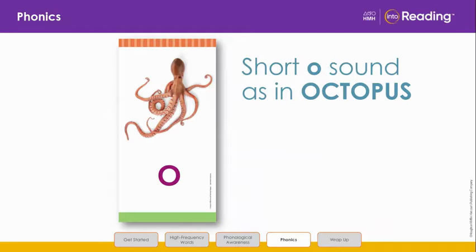Let's review some vowels. Remember that one of the vowels is O. Octopus begins with a short O sound, AH. Say it with me: AH. The AH vowel sound can be anywhere in a word.